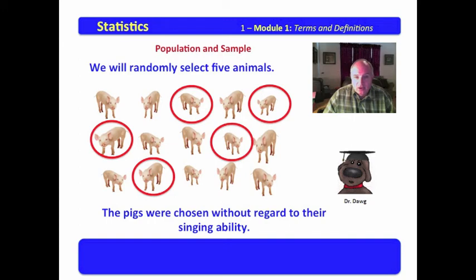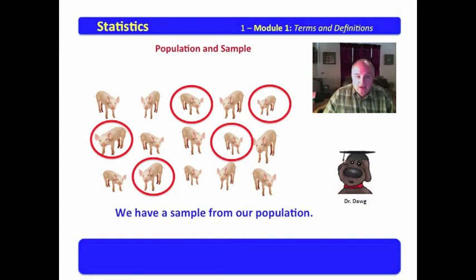They were chosen without regard to their singing ability. Now, we have a sample from our population. You will recall the population is the universe of interest, the universe being the entire group. The sample is a part of the population. And again, our sample was random.